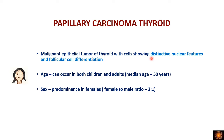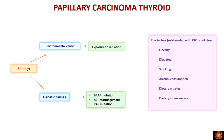The tumor cells of papillary carcinoma have distinctive, characteristic nuclear features and show follicular cell differentiation. Regarding age and sex, it is more common in females, showing female predominance with a female-to-male ratio of three to one. It can occur in children as well as adults, spanning a wide age group.